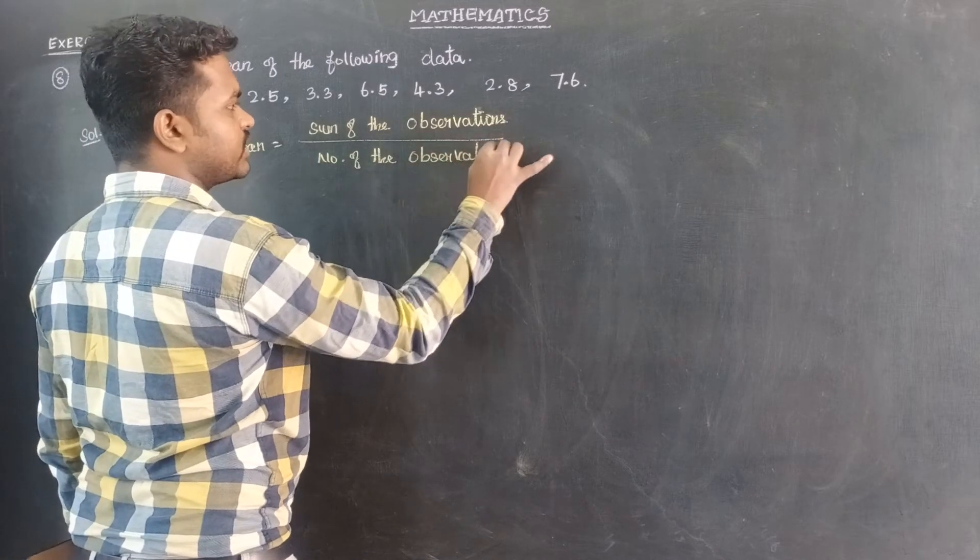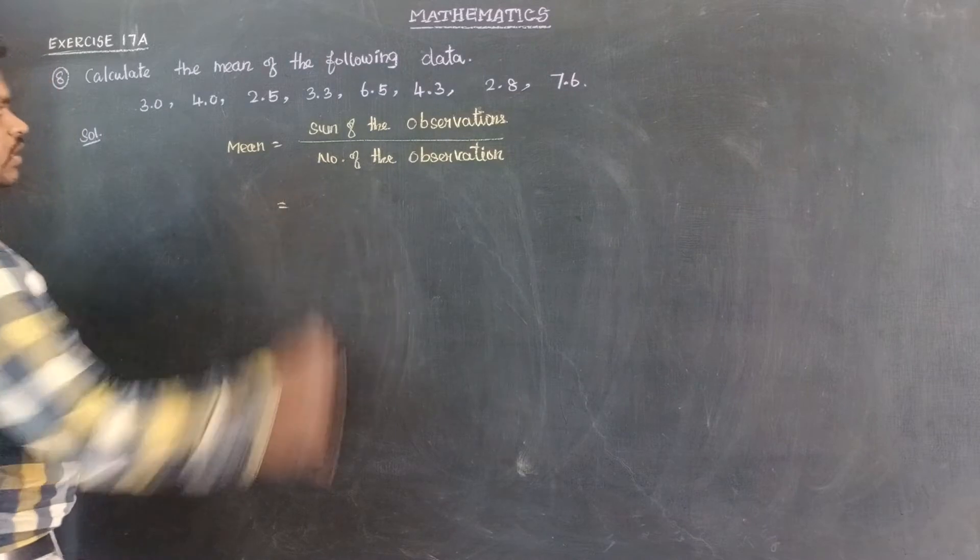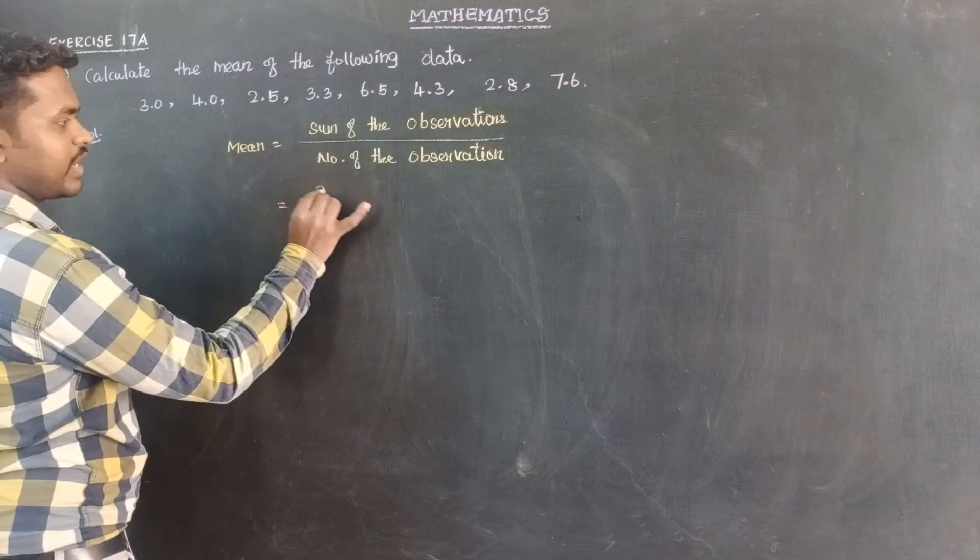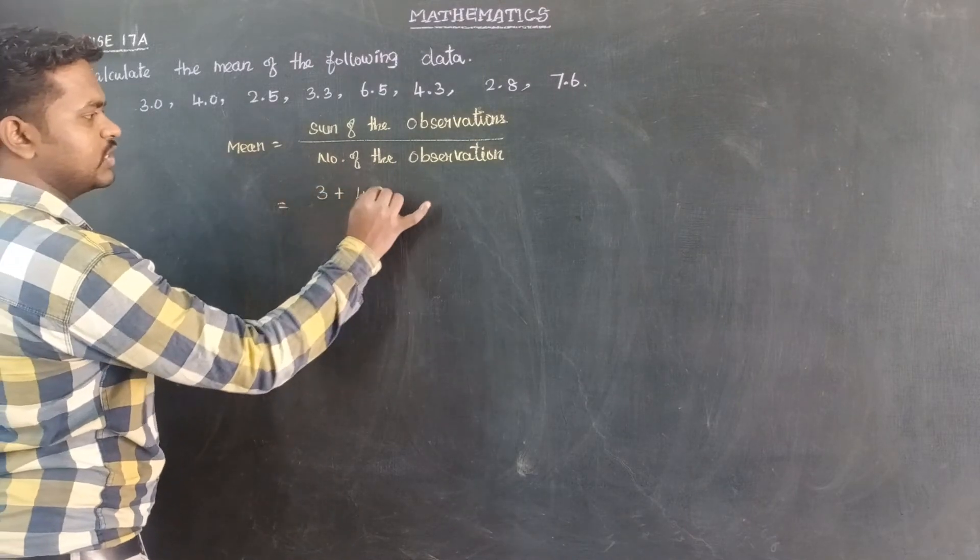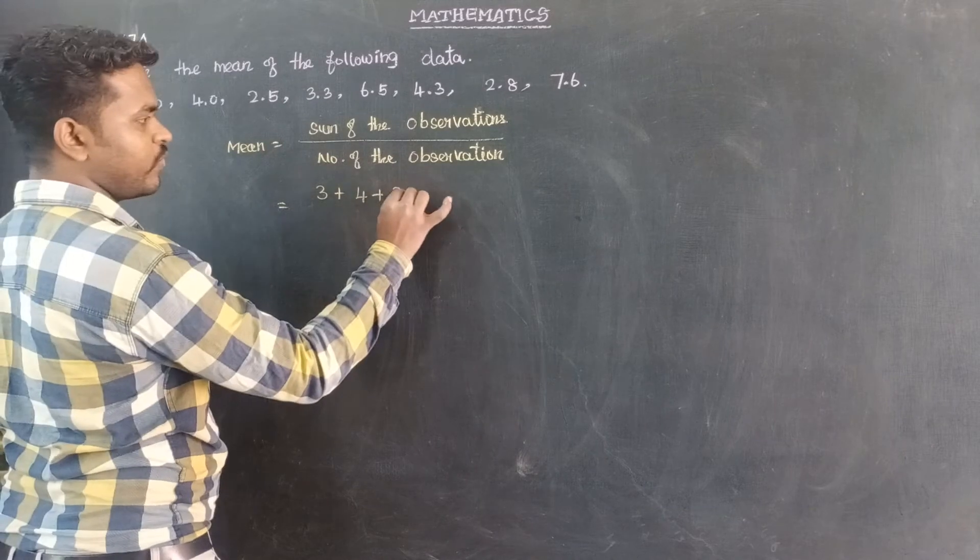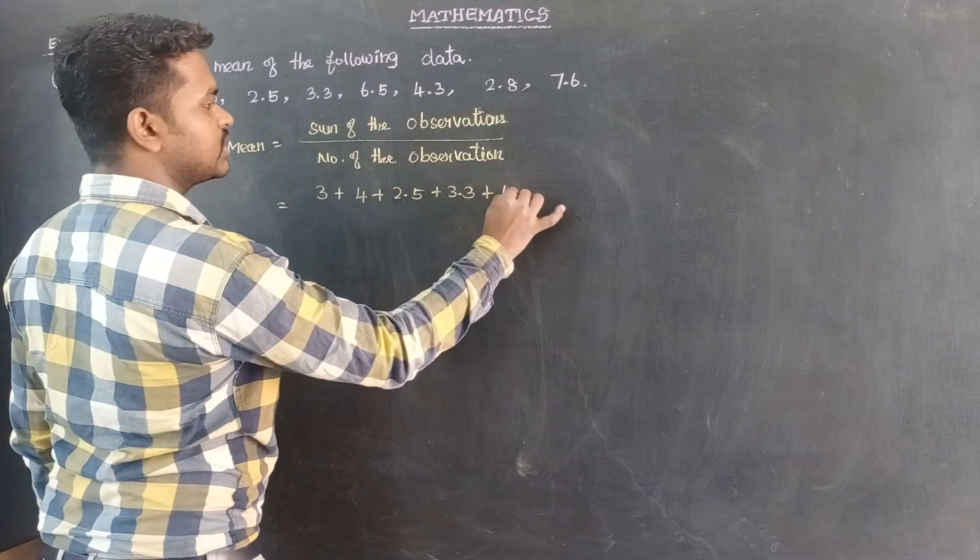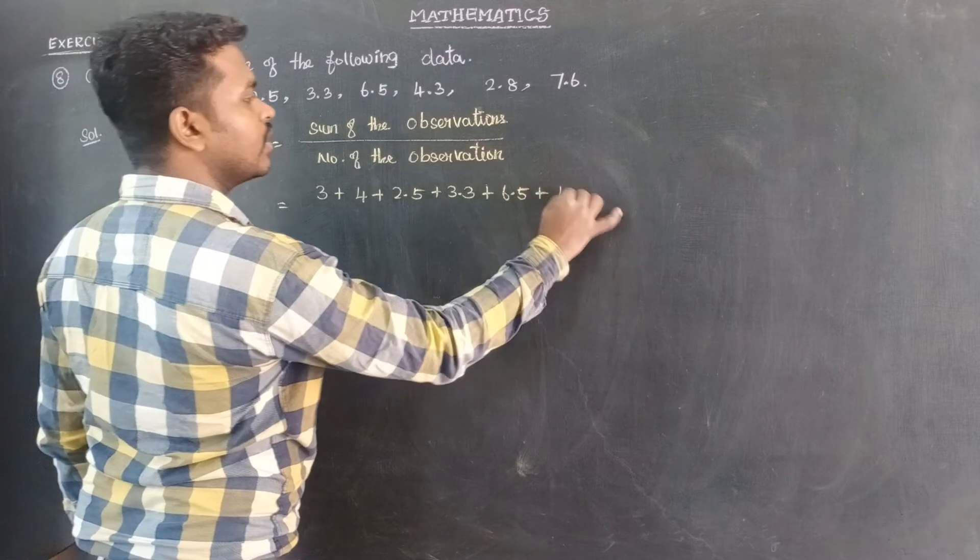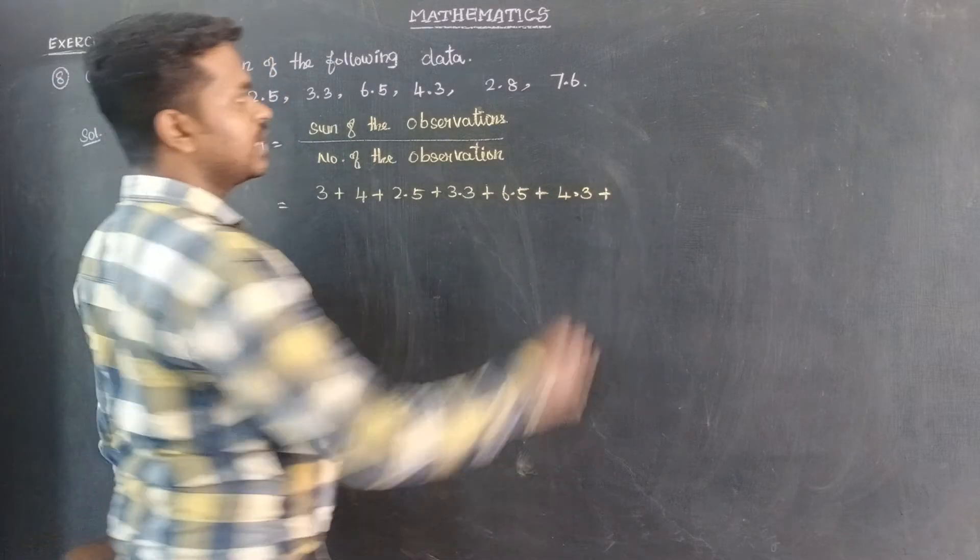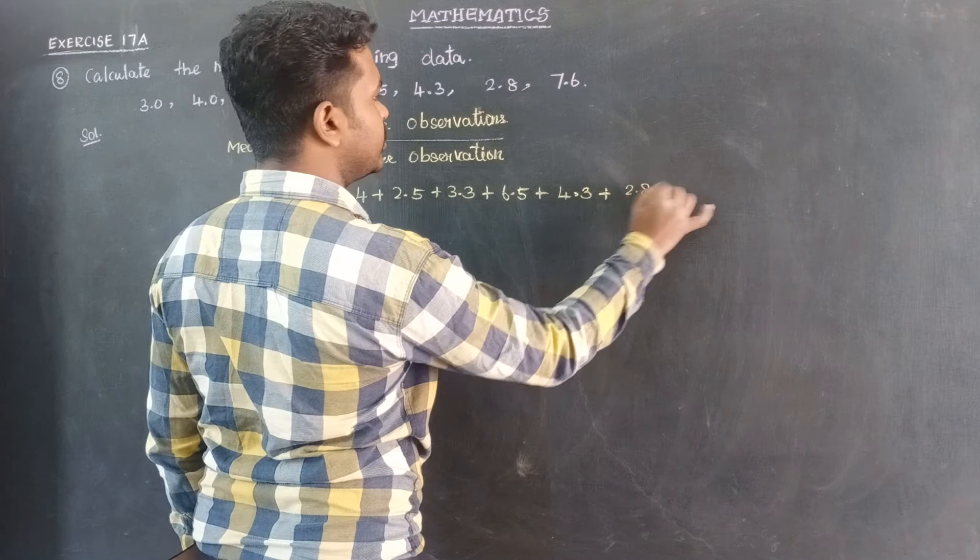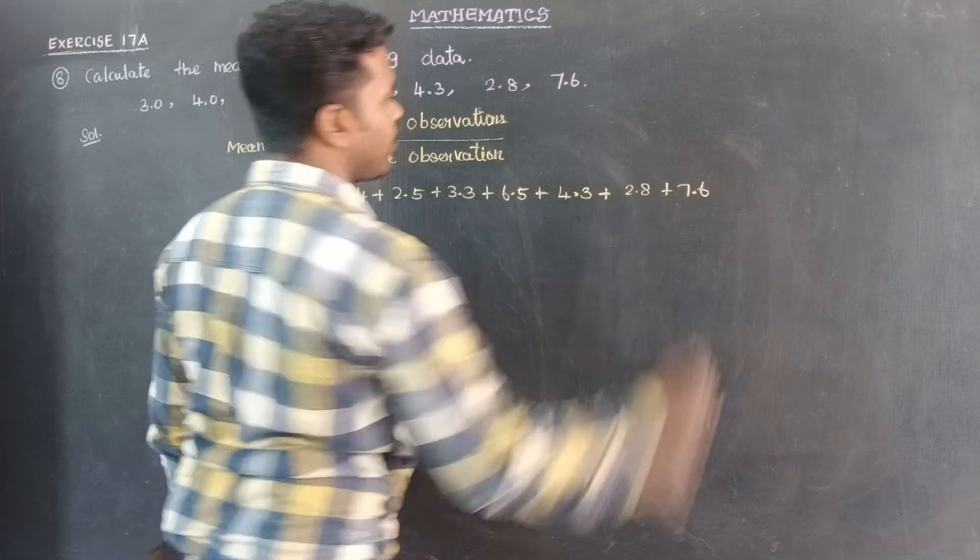It would be observations in number. So it is equal to 3.0 we can write as 3, 4.0 that is 4, 2.5, 3.3 plus 6.5, 4.3 plus 2.8 plus 7.5.